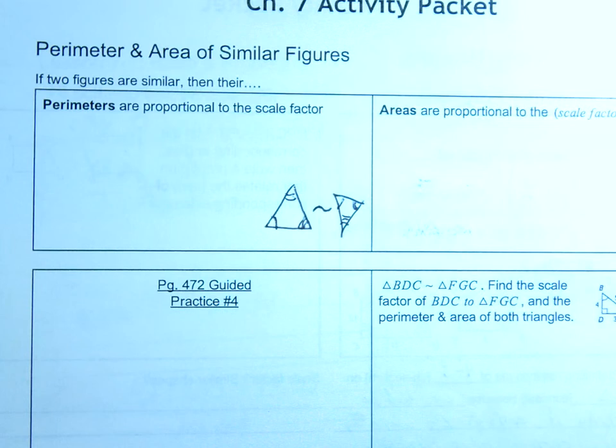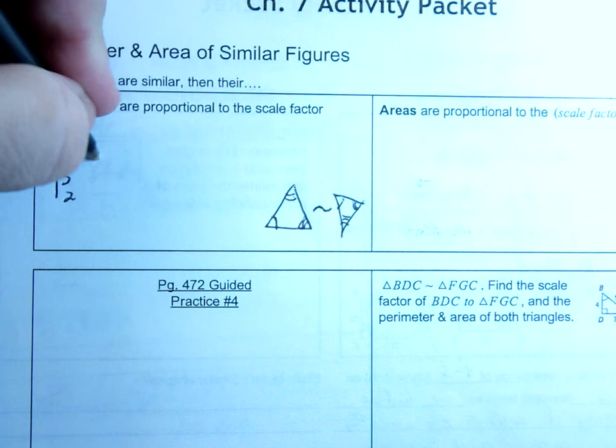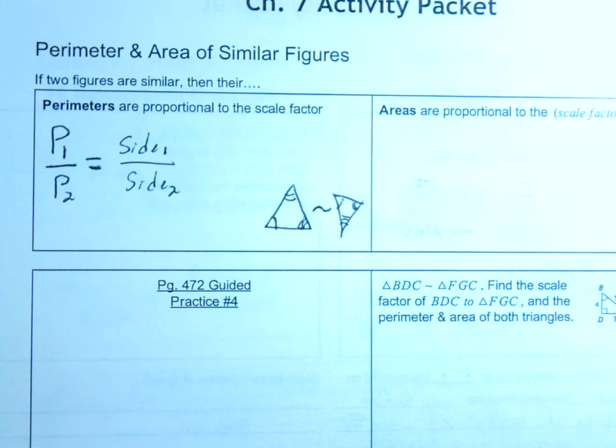And that means the perimeter of the first one divided by the perimeter of the second one, that's equal to the side of the first one divided by a side of the second one. They'll have the same proportion. Okay, well that's great.